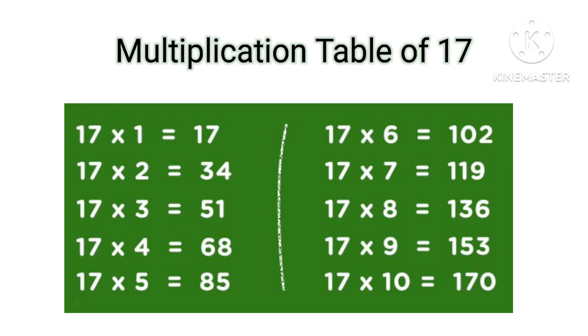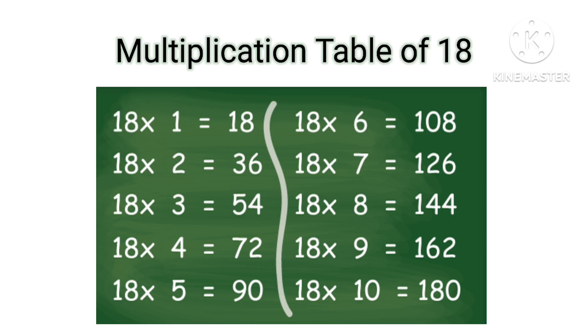Table of 17: 17×1=17, 17×2=34, 17×3=51, 17×4=68, 17×5=85, 17×6=102, 17×7=119, 17×8=136, 17×9=153, 17×10=170.